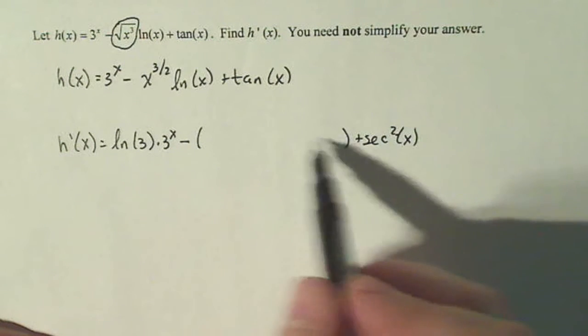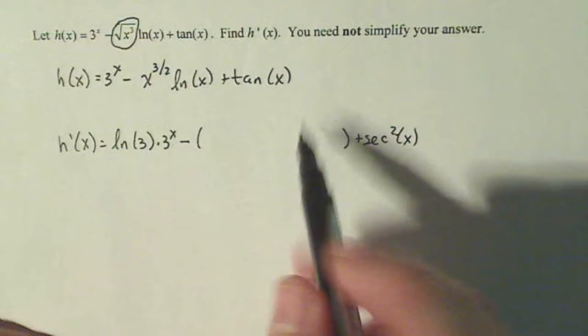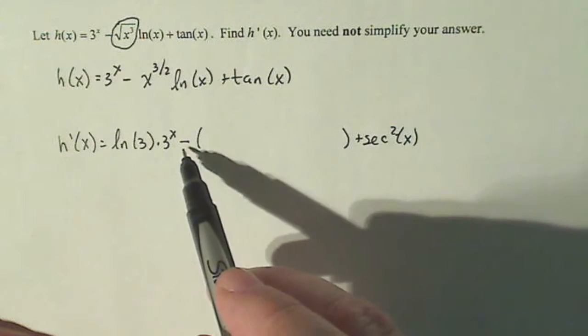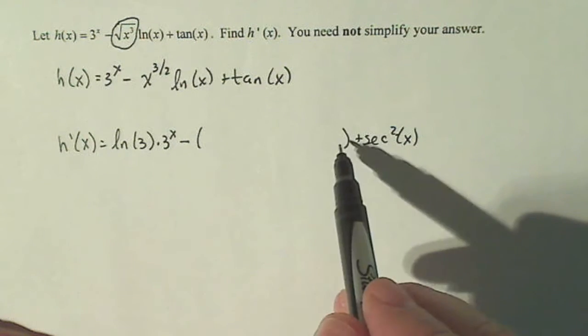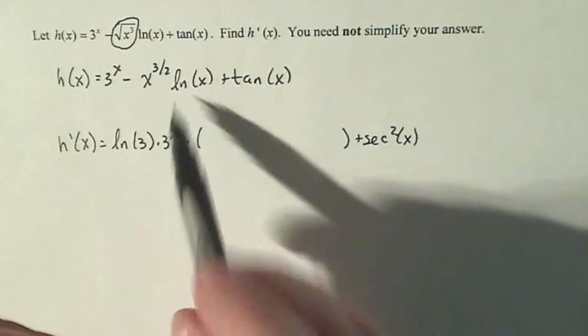Now to do the product rule here, notice since there's a negative sign up front, I'm gonna put a negative sign in big parentheses and I'm gonna fill that in with the derivative of these guys.